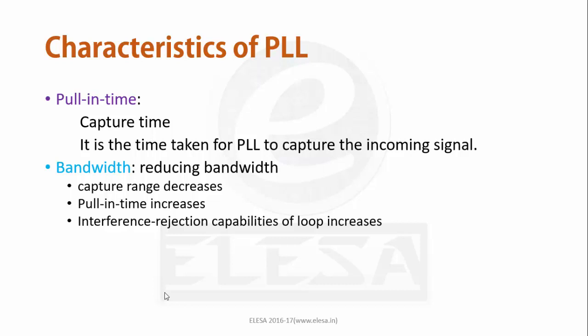Bandwidth is the second characteristic and it has the following effects if it is reduced: capture process becomes slower, capture range decreases, pulling time increases, and interference rejection capabilities of loop increases.